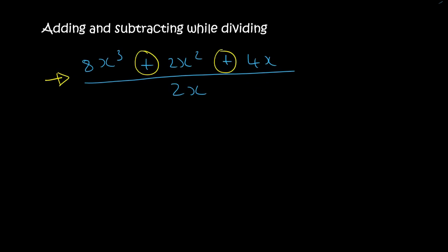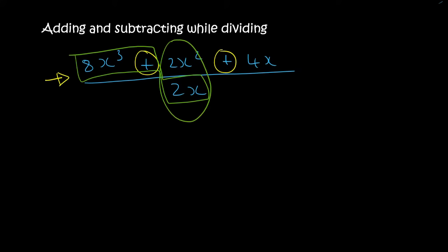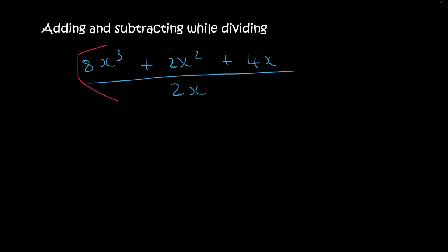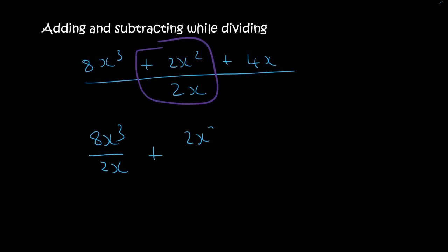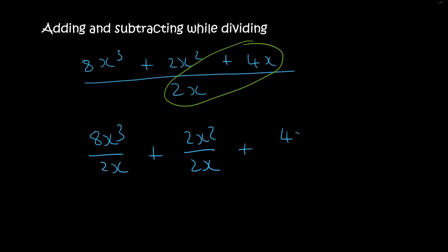Maths is all about practice, and as you practice you'll start to see the different types. What you do with these ones is you sort of take that part, then you take that part, and then you take that part. So you will take that first part and separate it. That will become 8x³ over 2x, then plus 2x² over 2x, and then the last part is plus 4x over 2x.